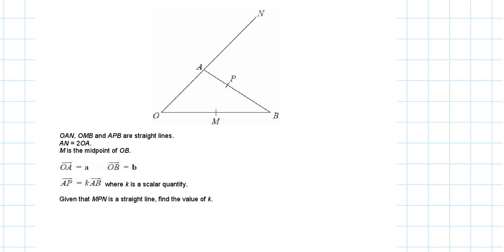Assalamu alaikum everyone, got a vectors question we were struggling on earlier. Let me see if I can solve it now. The question states: OAN, OMB, and APB are straight lines, AN is 2OA.